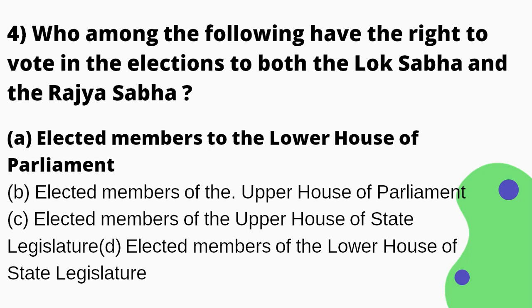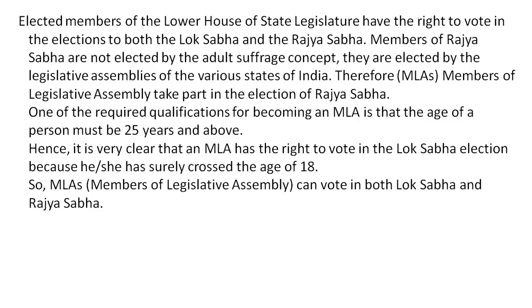Who among the following have the right to vote in the election to both the Lok Sabha and Rajya Sabha? Option A — elected members of the lower house of the Parliament; option B — elected members of the upper house; option C — elected members of the upper house of the state legislature; option D — elected members of the lower house of the state legislature. The right answer is option D.